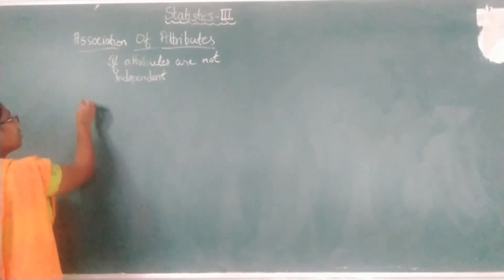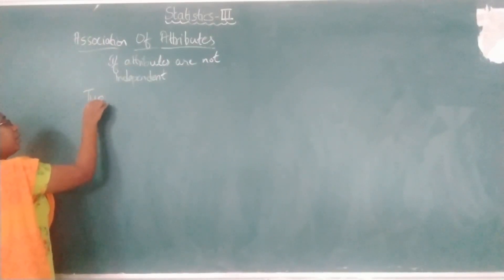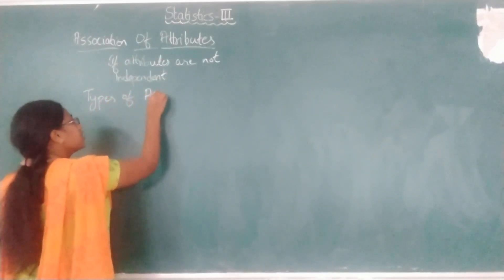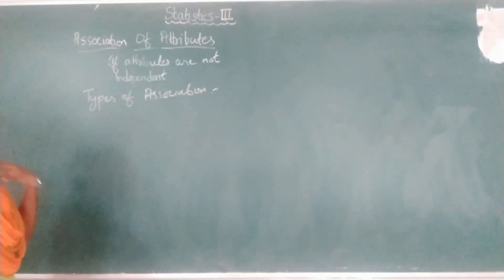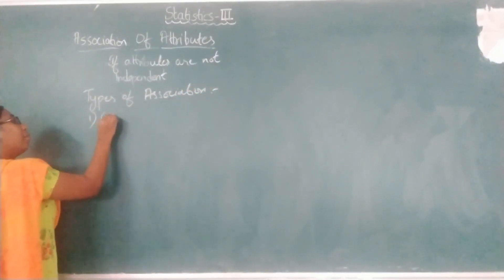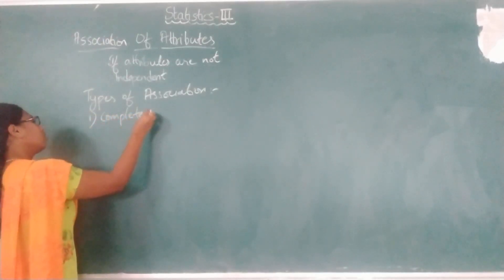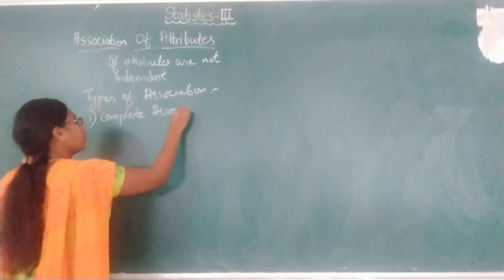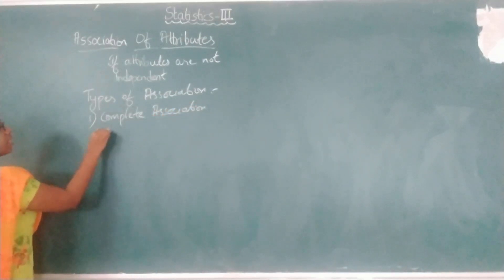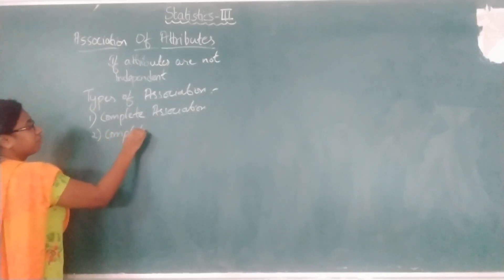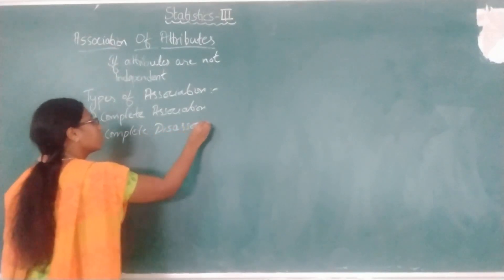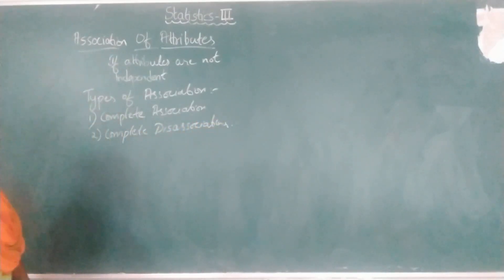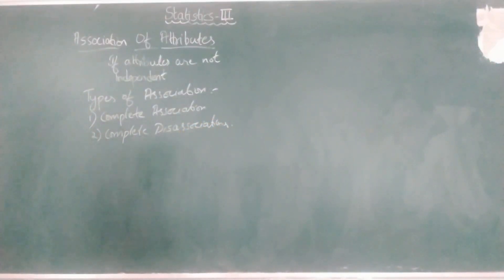Coming to the types of association, there are two types. The first one is complete association, and the second one is complete disassociation. These are the two types under association.